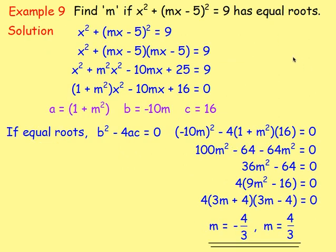Another example: find the value of m if x² + mx - 5 all squared equals 9 has equal roots. Multiply out the brackets, take everything to one side into the form ax² + bx + c = 0. Write down a, b, and c. Since we're told equal roots, the discriminant equals zero: b² - 4ac = 0. Sub in a, b, and c and solve, giving two possible values of m.